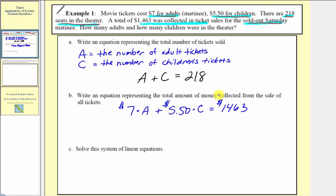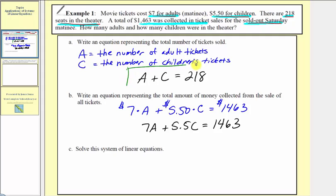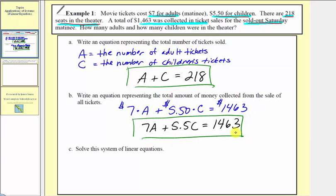Simplifying and dropping the dollar signs, our second equation is: seven A plus five point five C equals one thousand four hundred sixty three. Our system of equations consists of this equation and this equation. For Part C, we want to solve this system — let's do that on the next slide and come back to answer the question.